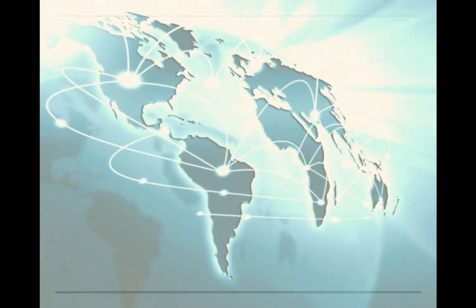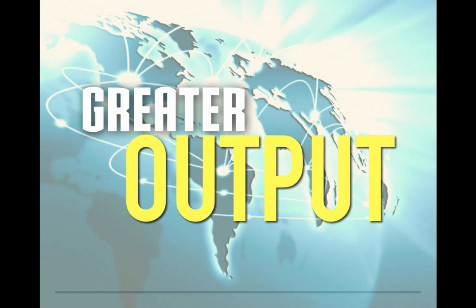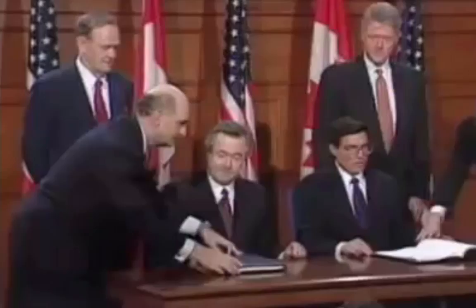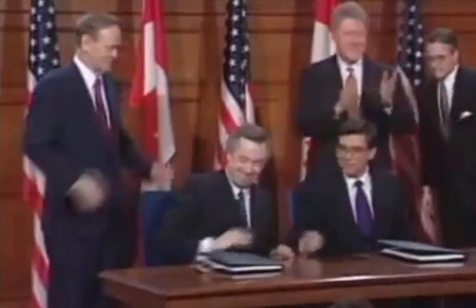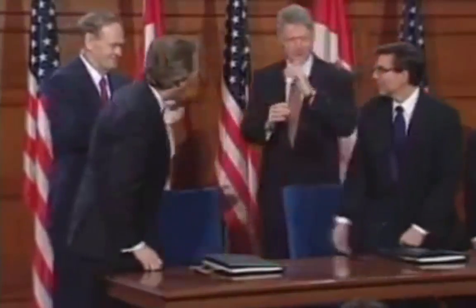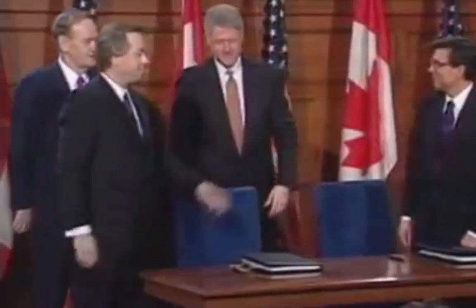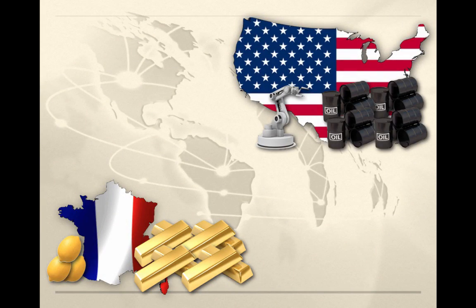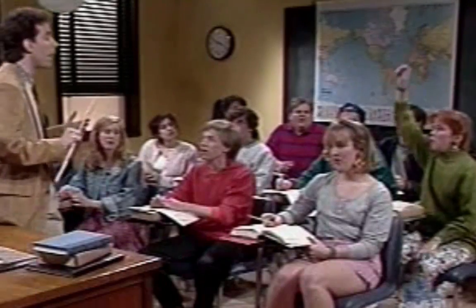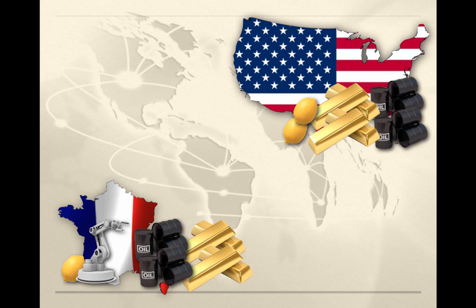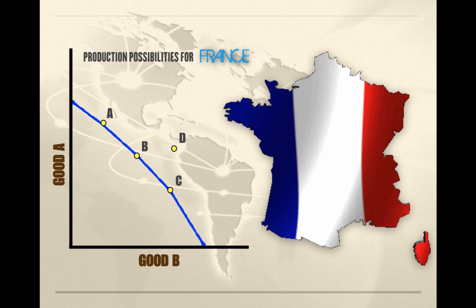Another benefit of trade is greater output around the world. Trade can better ensure that economies around the world will be more productively efficient and waste fewer resources in the production process. Trade can also ensure that economies can increase their production possibilities and shift their PPCs outward. For example, if France trades with the United States to gain resources, with improved technologies and raw materials, France can now produce at a point outside their current production possibilities curve, shifting their PPC outward as they gain more resources and increase productivity.